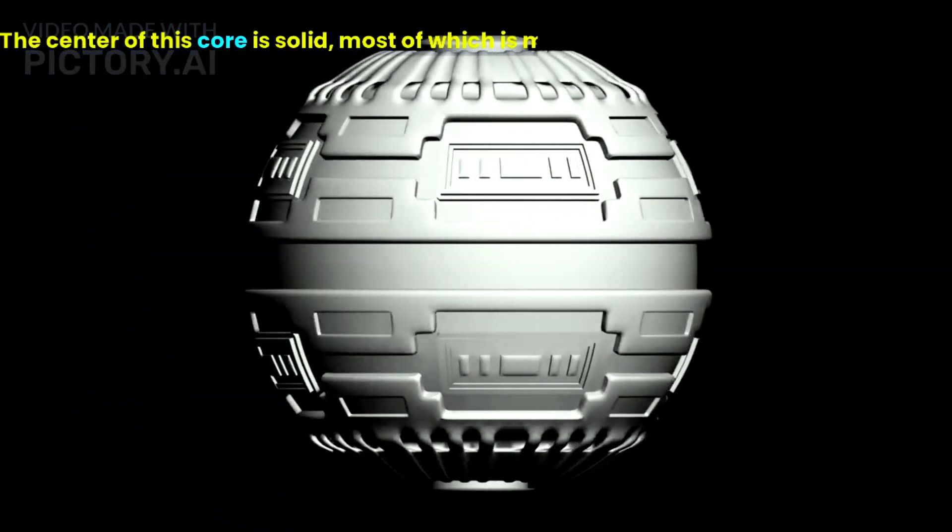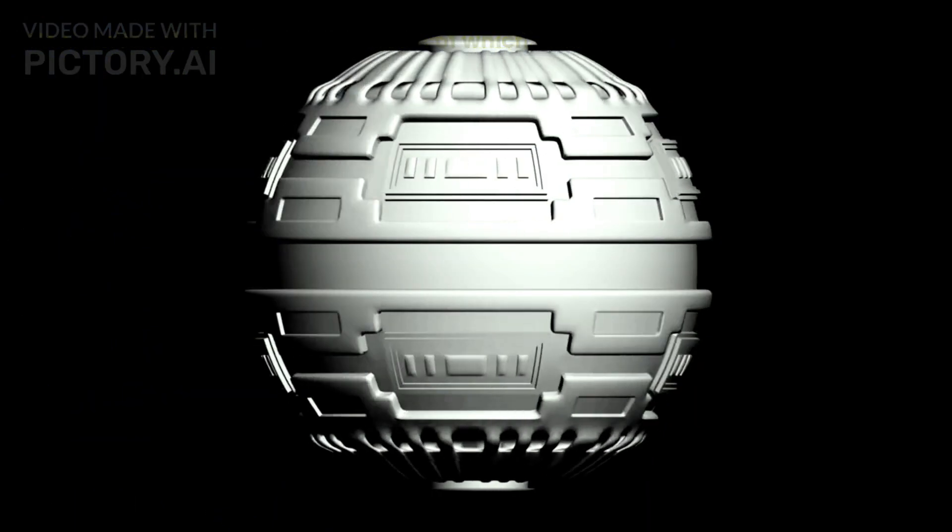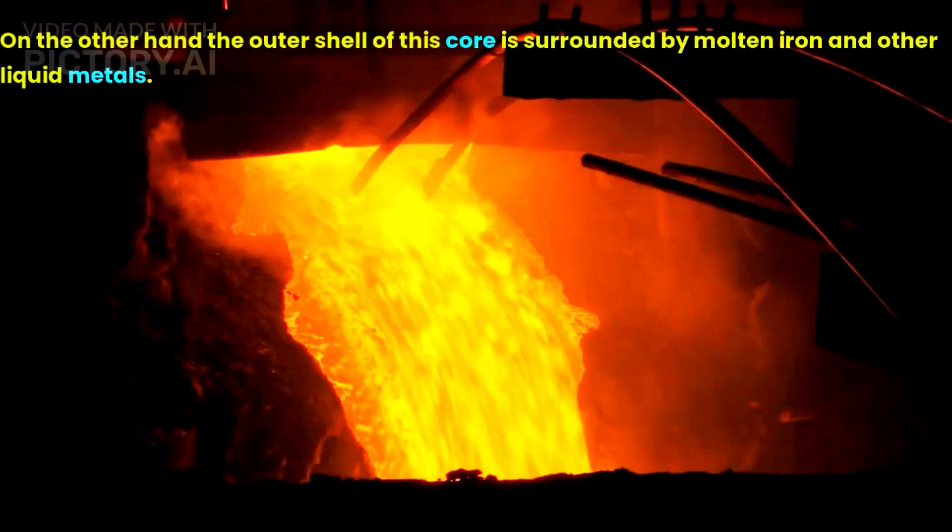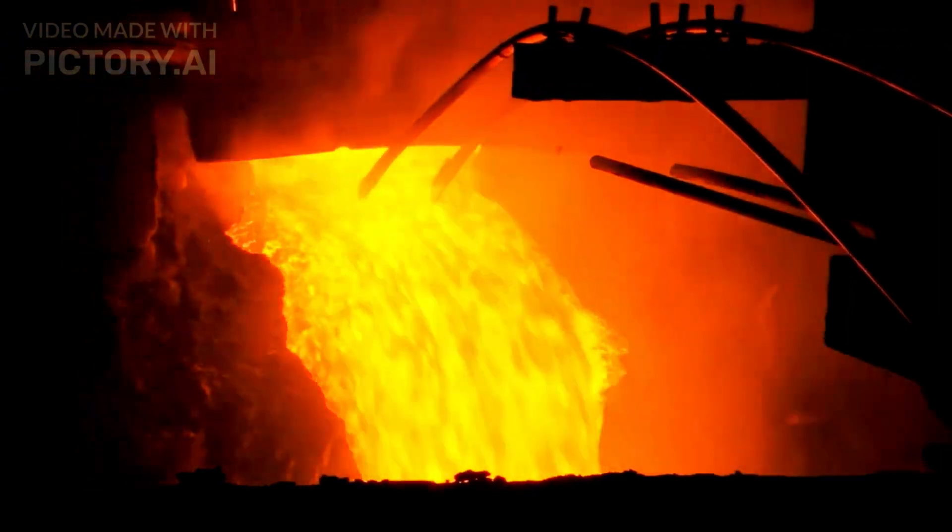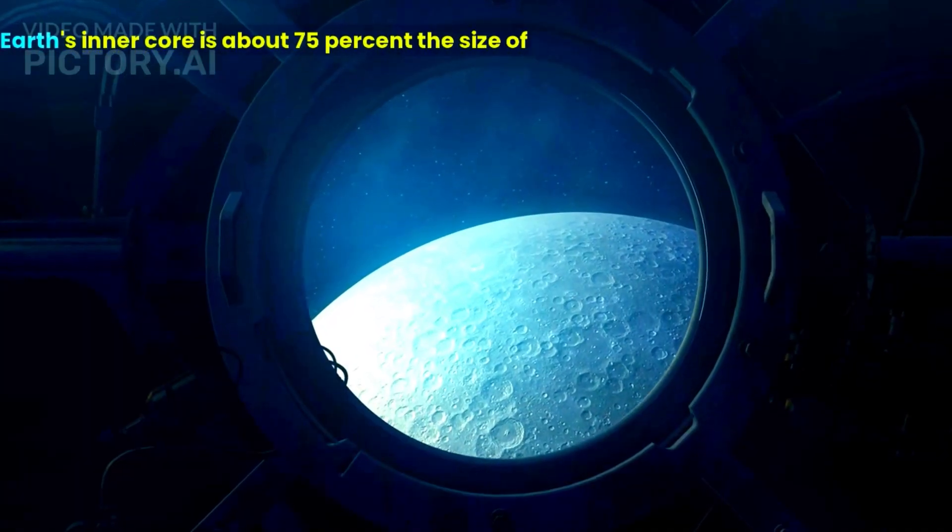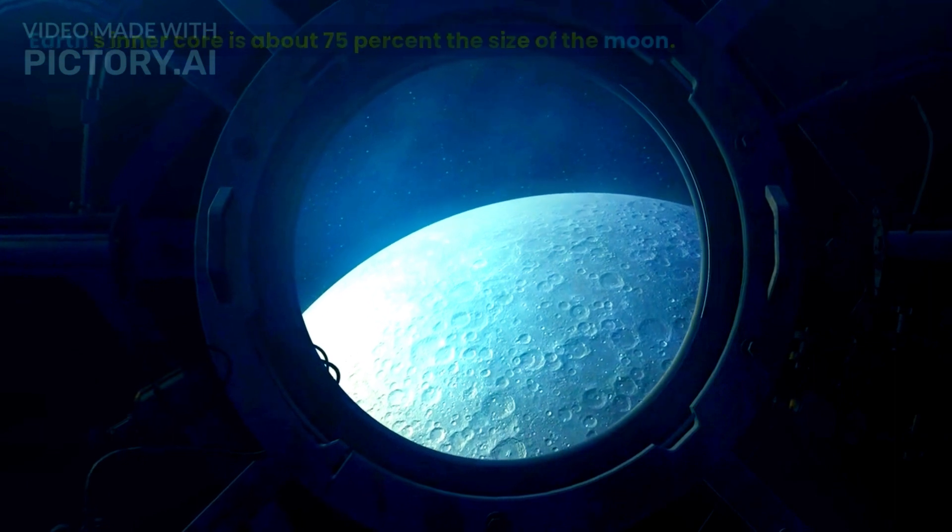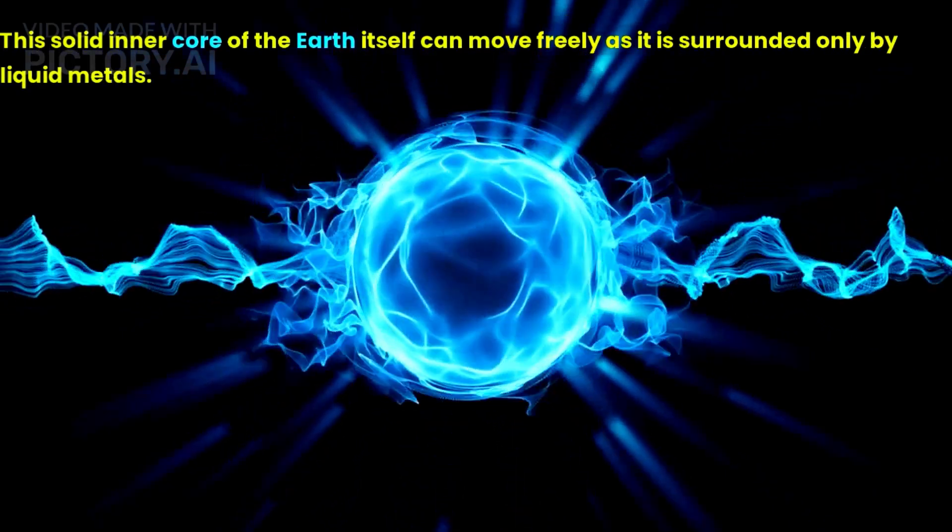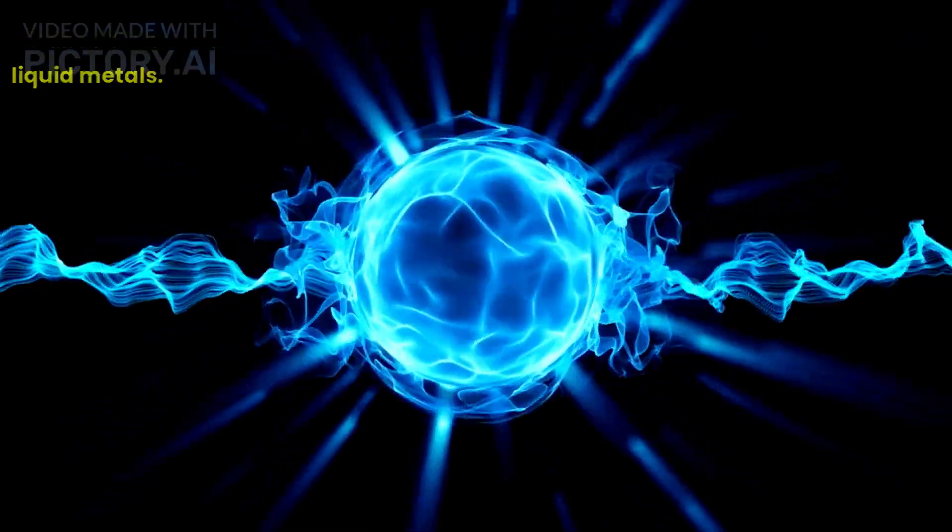The center of this core is solid, most of which is made of iron. On the other hand, the outer shell of this core is surrounded by molten iron and other liquid metals. Earth's inner core is about 75% the size of the moon. This solid inner core of the earth itself can move freely as it is surrounded only by liquid metals.